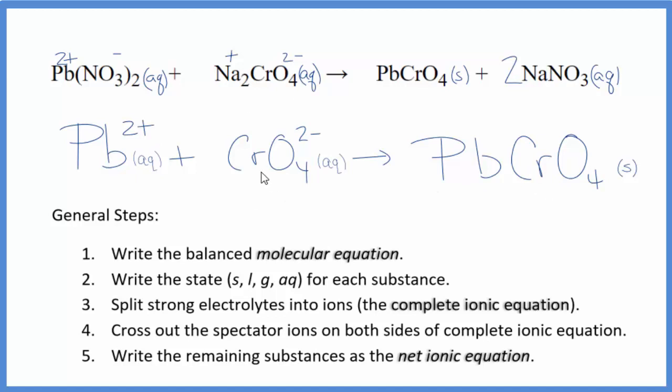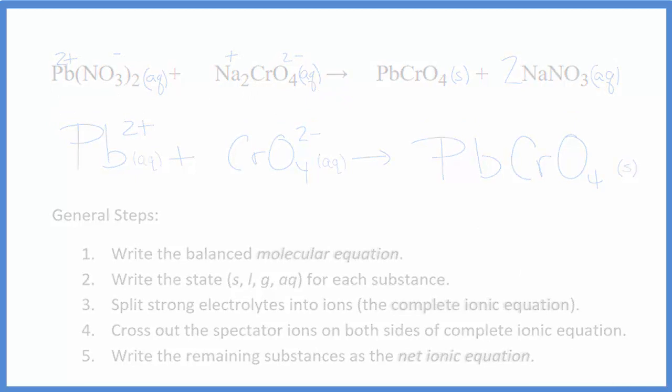So this is the balanced net ionic equation for lead(II) nitrate plus sodium chromate. You'll notice that charge is balanced. We have a 2+, 2-. They balance out net charge of zero. Over here, we have a neutral compound net charge of zero. If you count the atoms up, they're balanced as well. This is Dr. B with the balanced net ionic equation for lead(II) nitrate plus sodium chromate. Thanks for watching.